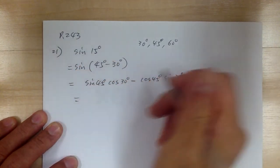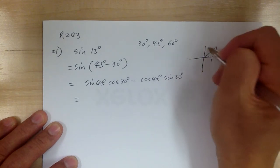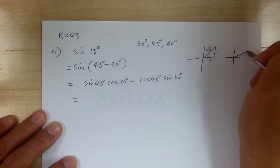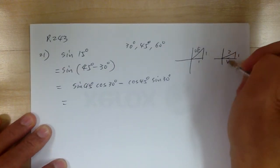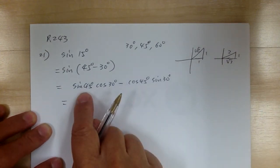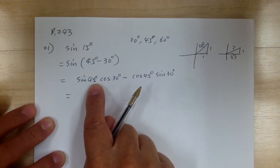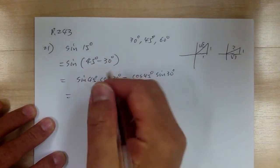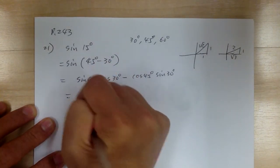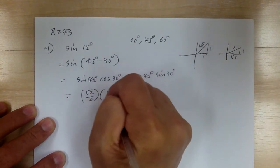From here you can use the reference. If you don't remember, you can just draw these — so 1, square root of 2, and that's for the 45. And the 30 is over here, so you get 1, 2, square root of 3. You can use that as a reference, or it's probably better to use the one on the handout. So this will give you square root of 2 over 2. Cosine of 30 would be square root of 3 over 2.